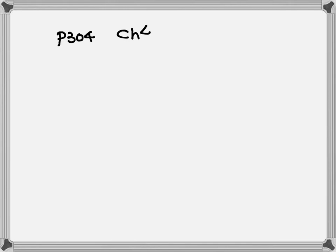Okay, page 304, section 4.4. Let's look at number 6. Number 6 here, we have negative 4p squared times parenthesis of 5p to the 4th.